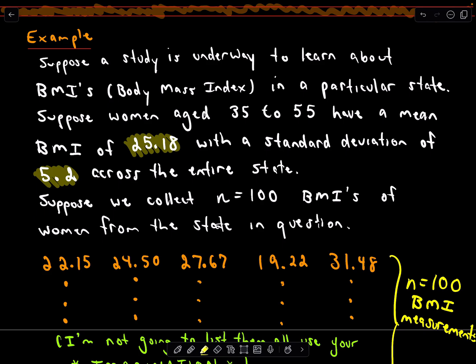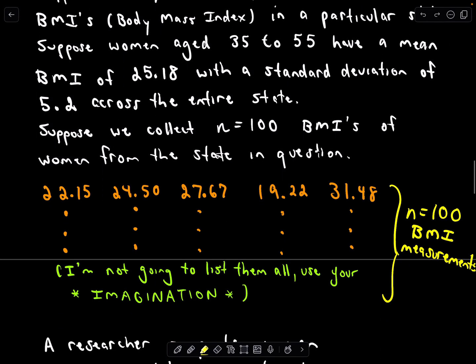The idea is we're going to go out there and collect some data, and from that data we're going to try to make a guess. Does this old BMI still hold true, or is the BMI going up, which would maybe cause us to think that maybe the levels of obesity are also going to increase. That's the general idea.